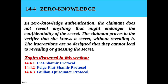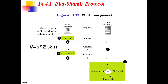We will discuss three protocols: Fiat-Shamir, Feige-Fiat-Shamir, and Guillou-Quisquater protocol. In the Fiat-Shamir protocol, a trusted third party chooses two large prime numbers p and q to calculate n = p × q, where p and q are kept private and n is kept public. Alice chooses a secret number s between 1 and n−1, then calculates v = s² mod n. The first step is Alice chooses a random number r between 0 and n−1 and calculates x = r² mod n.